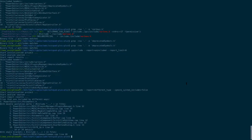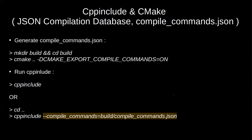Let's come back to the presentation. These tools support the JSON compilation database that is generated by CMake, which can be more convenient because it stores information about include paths.